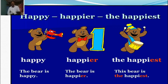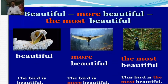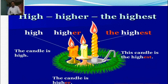Another example: Big — bigger — the biggest. The cake is big — positive. The cake is bigger — comparative. This cake is the biggest — superlative. Beautiful — more beautiful — the most beautiful. The body is beautiful — positive. The body is more beautiful — comparative. This body is the most beautiful — superlative. High — higher — the highest. The candle is high — positive. The candle is higher — comparative. This candle is the highest — superlative.